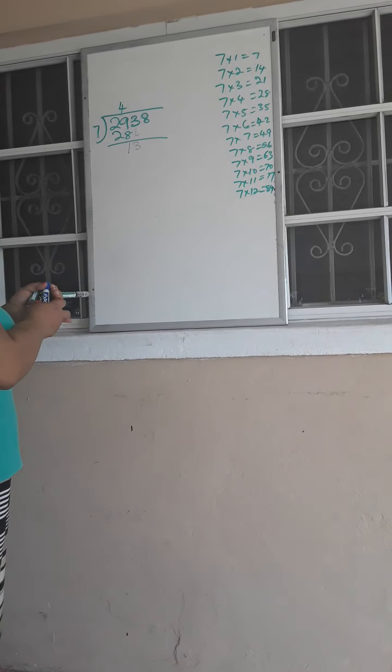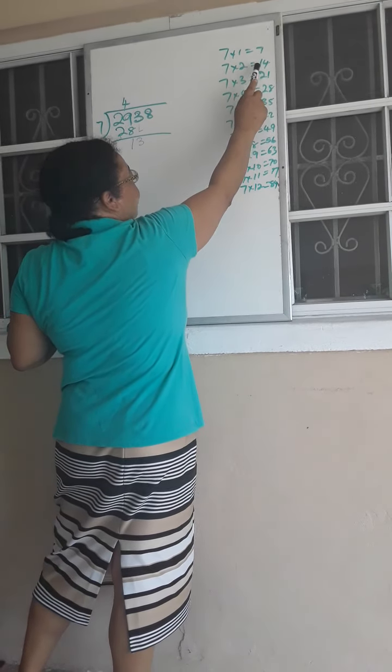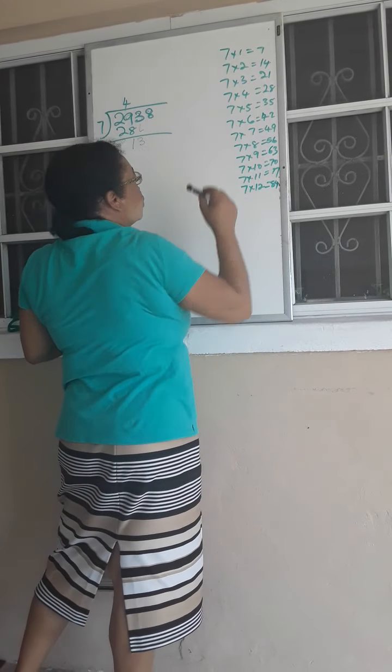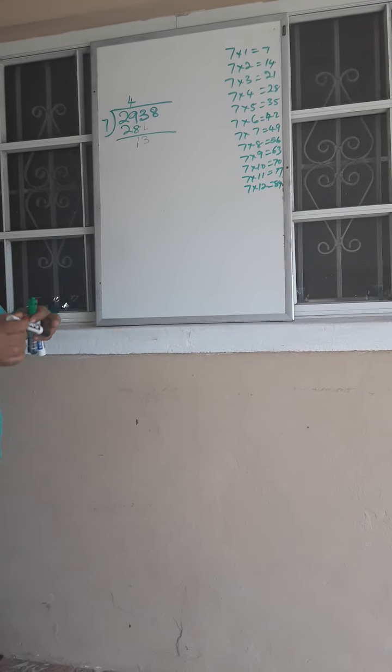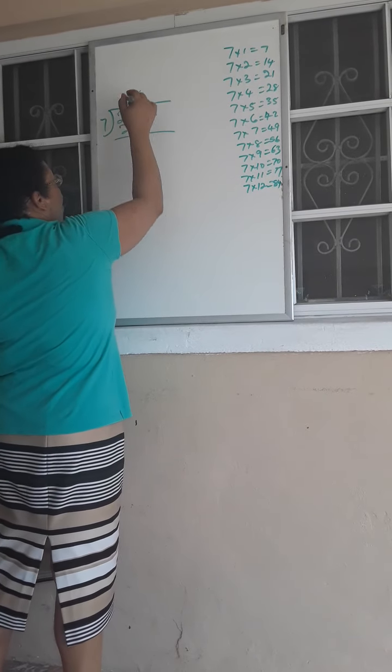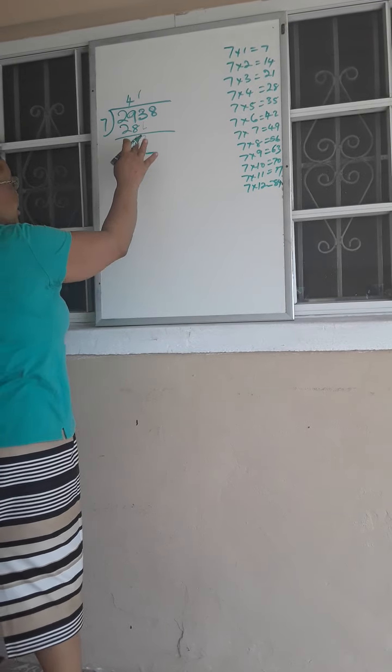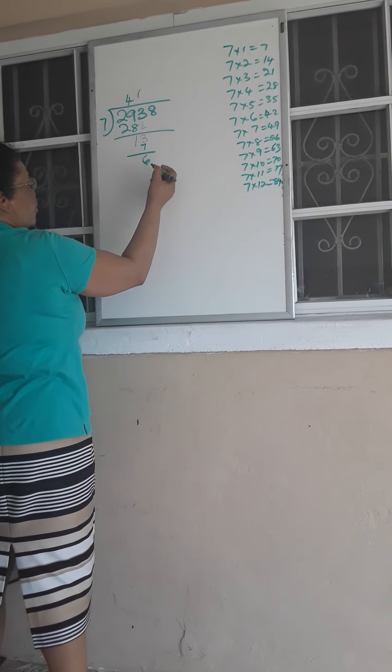Then I go 7 into 13. You can't go 2 times because 2 times 7 is going to give me 14. So 7 into 13, I would only get 1. 1 times 7 is 7. 13 take away 7, I'm left with 6.